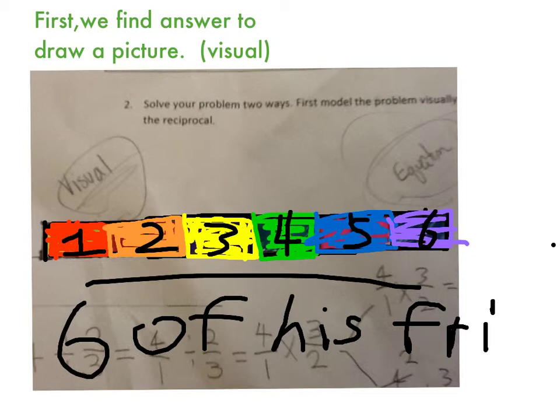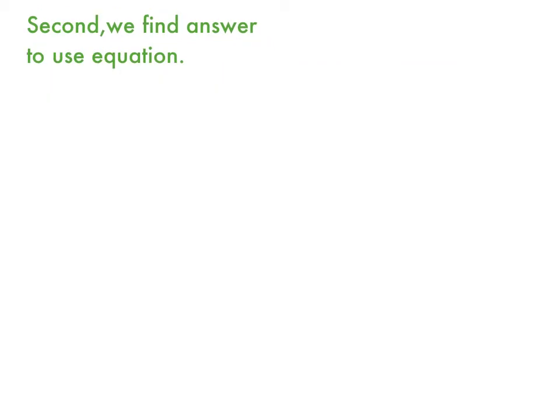So, this is a picture. So, Jaeyoung has four cakes. And he wants to give 2/3 of cake to each of his friends. So, we have to divide.